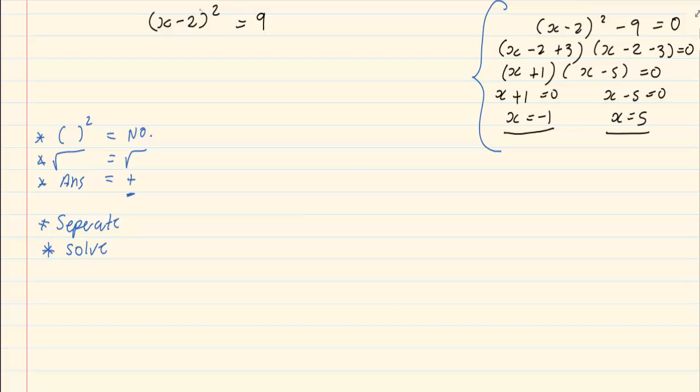Here we have the square on one side and the numbers on the other. So we square root both sides. The square cancels out the square root, leaving us with x-2.